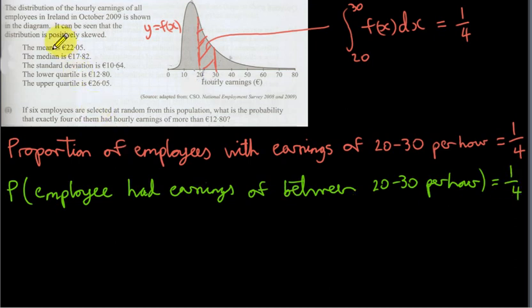So we could imagine taking all the employees in Ireland in October 2009 and randomly selecting just one of them. If it's a true random selection, it means that each employee is equally likely to be selected. So you could imagine a gigantic lottery involving hundreds of thousands of employees and we pick one at random. The probability that that particular employee had earnings between 20 and 30 euros per hour will be a quarter. So you should be well aware of these two interpretations.